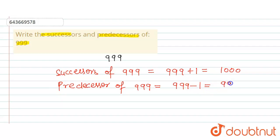This is equal to 998. So 998 is the predecessor of 999, and 1000 is the successor of 999.